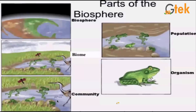The variety of populations is called a community, and the community living together with an environment — that atmosphere is called a biome. And it is fully known as the biosphere.